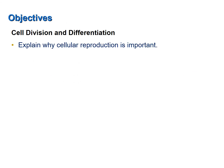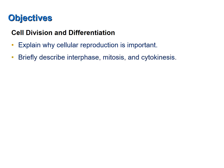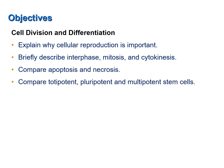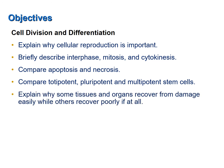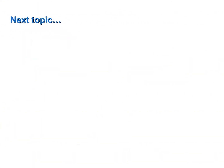To review the objectives of this screencast: explain why cellular reproduction is important; briefly describe interphase, mitosis, and cytokinesis; compare apoptosis and necrosis; compare totipotent, pluripotent, and multipotent stem cells; and explain why some tissues and organs recover from damage easily while others recover poorly, if at all. The topic of the next screencast will be DNA and cell specialization.